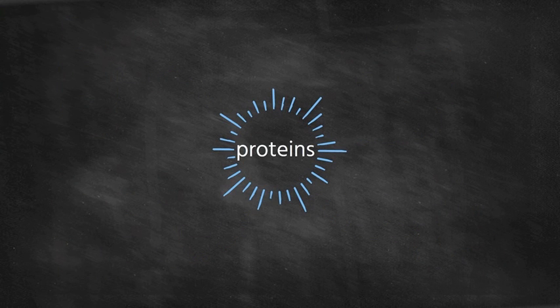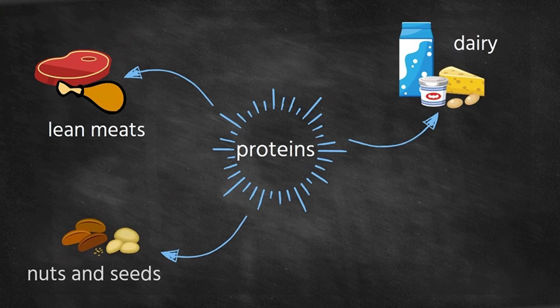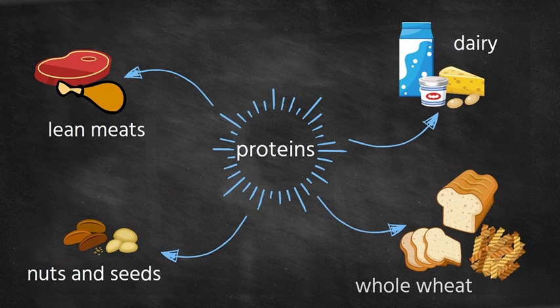Foods that have lots of protein are lean meats and dairy foods and nuts and seeds and whole wheat products.